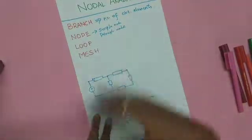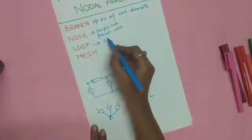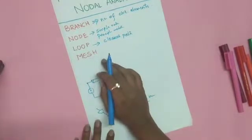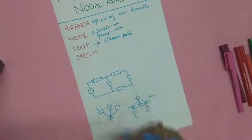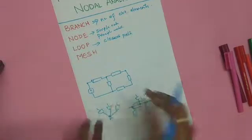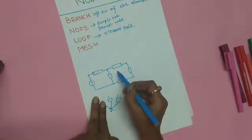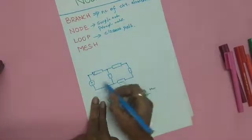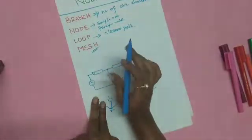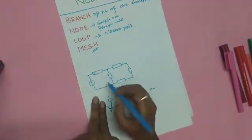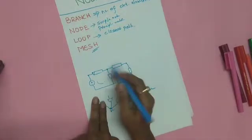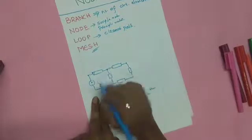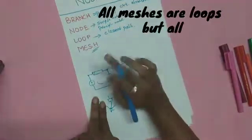A loop is any closed path within the network. Now, what is a mesh? Most people get confused between loop and mesh. A mesh is also a loop, but one which does not have any other loops within it. In this circuit there are three loops, but only two meshes — because the outer loop contains two inner loops within it. A mesh cannot be divided further. All meshes are loops, but not all loops are meshes.